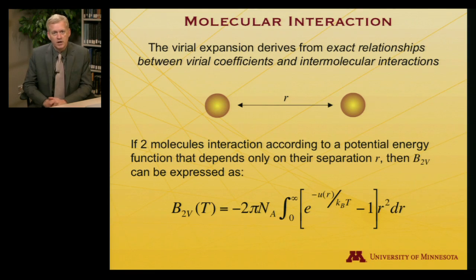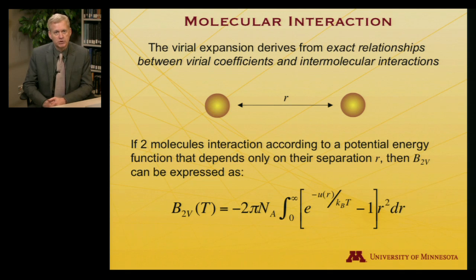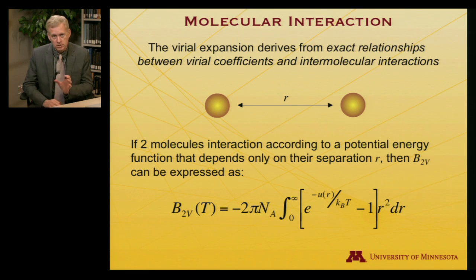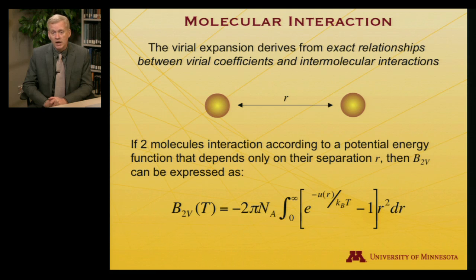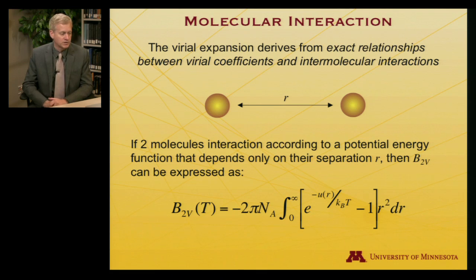Let me remind you that the virtue of having the intermolecular potential function is that we have a relationship between the potential — written on this slide in terms of U — where U is a potential that depends on an interparticle separation R, and the second virial coefficient, in this case B2V. By plugging a given potential U into that integral expression, we can compute B2V by solution of the integral and understand how a real gas will behave.